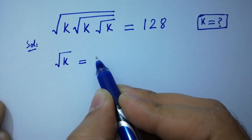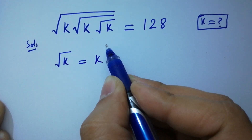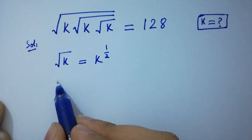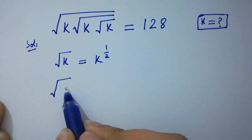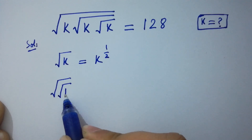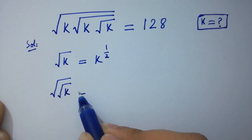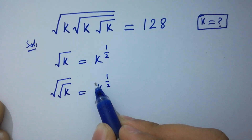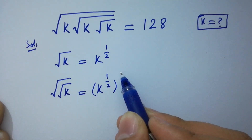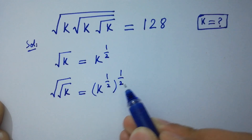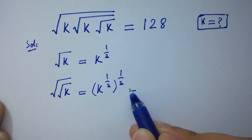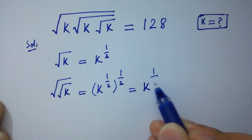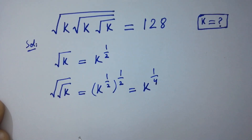...equals k to the power 1 over 2. Square root of square root of k equals k to the power 1 over 2, to the whole power 1 over 2, which is equal to k to the power 1 over 4.